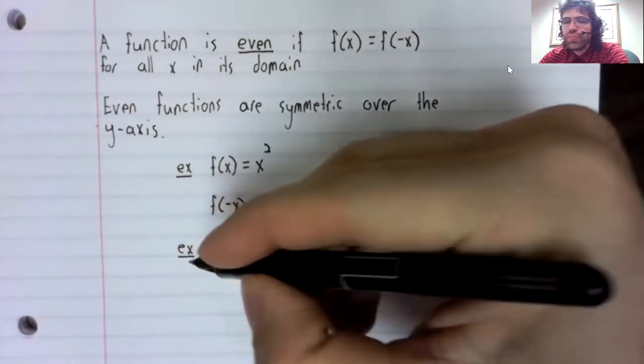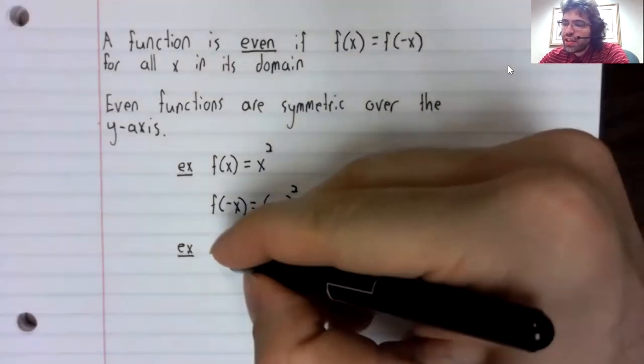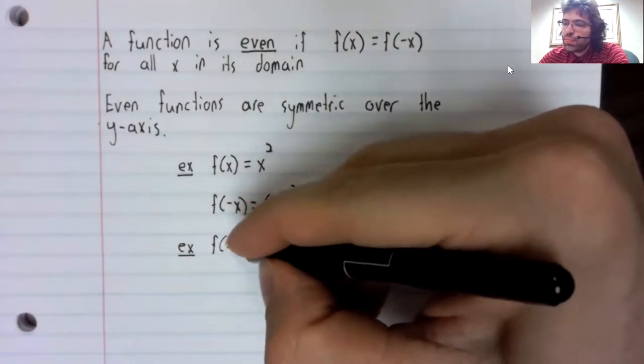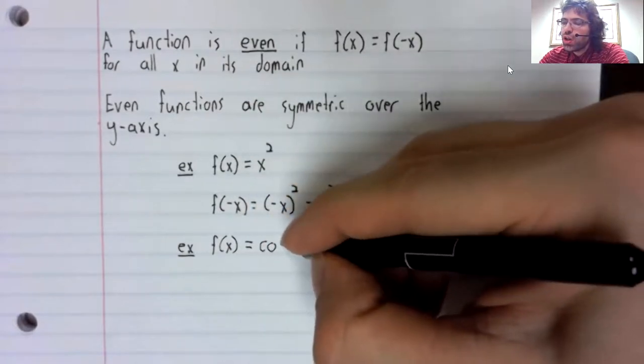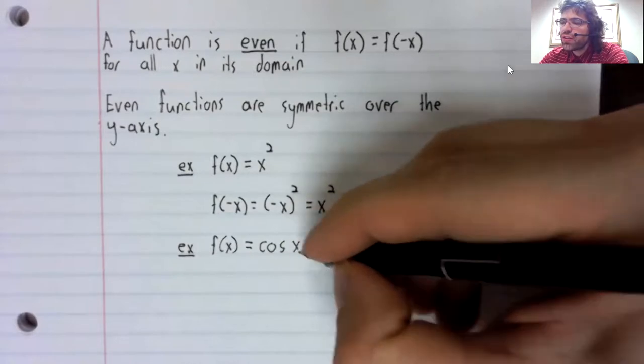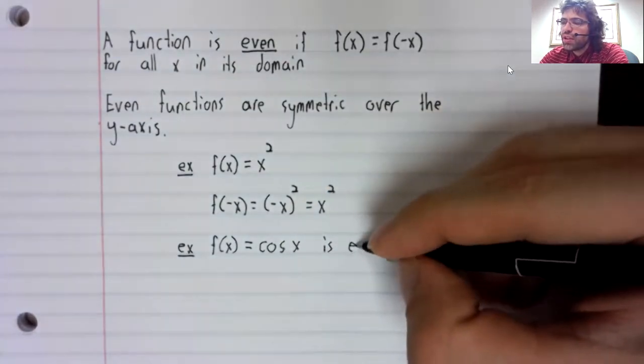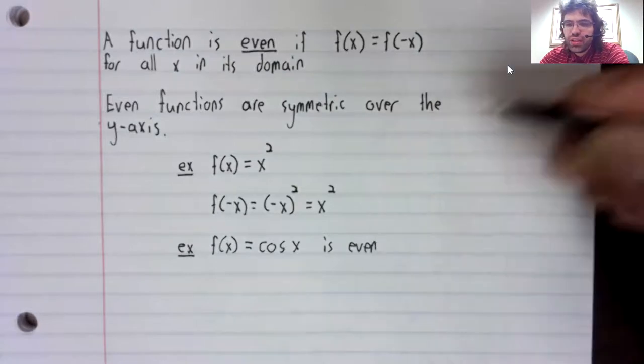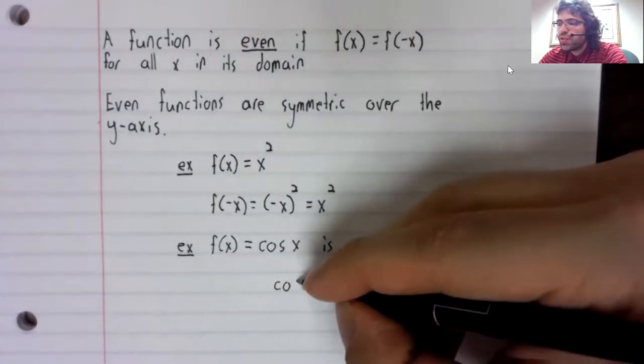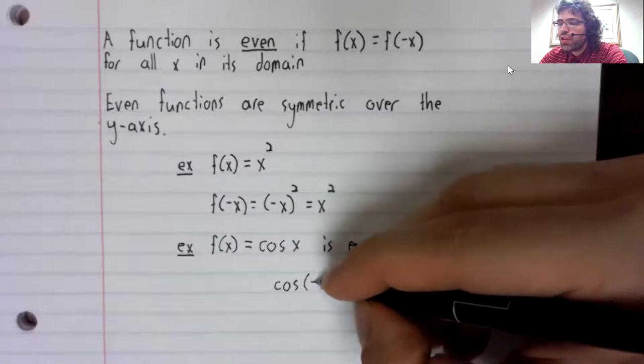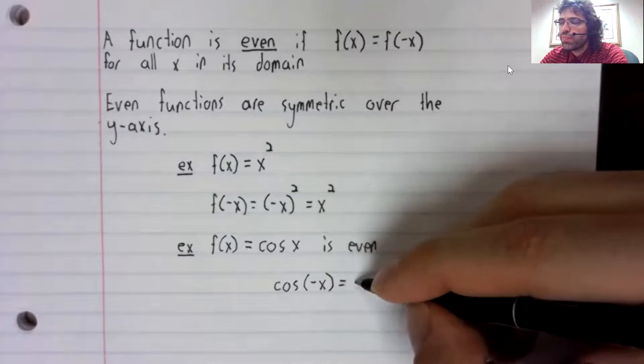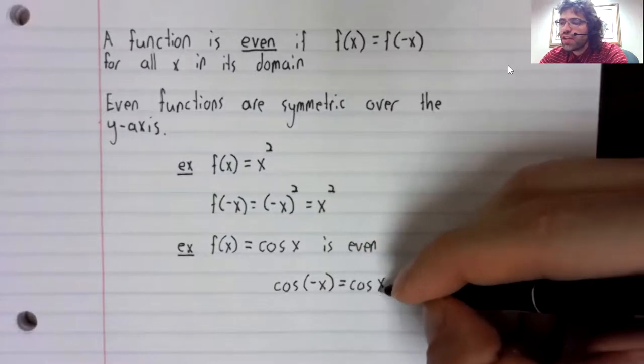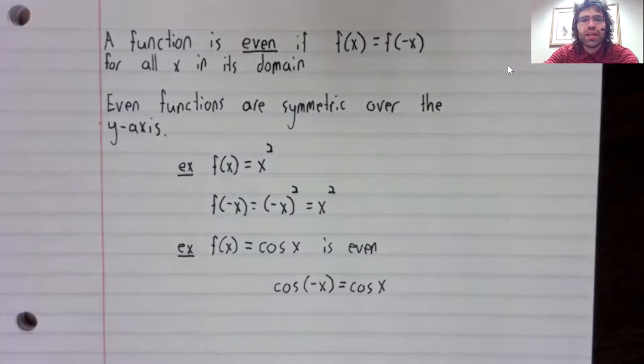And the really important thing to know for our purposes is this second example. So f(x) equals the cosine of x is even. That is to say, if we have the cosine of negative x, that's the same as having the cosine of x.